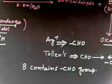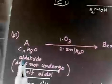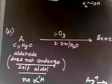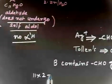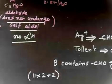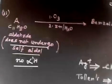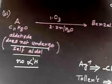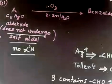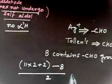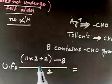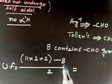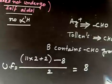Now let us calculate the unsaturation factor. We have 11 carbons, so the required number of hydrogens is 11×2+2 = 24. But we only have 8 hydrogens. Oxygen is not counted. So the unsaturation factor is (24 − 8) / 2 = 8. The degree of unsaturation is 8.